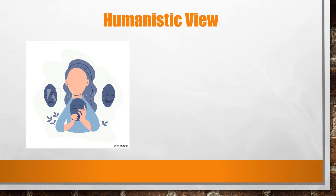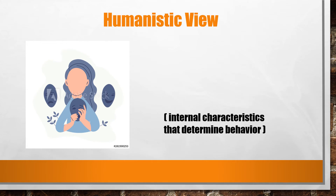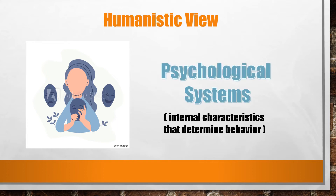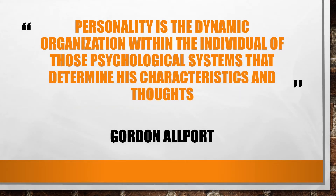According to Allport, even the behaviour which seems to be controlled by external forces is actually controlled by internal forces. The primary focus of Allport was on the traits and other internal characteristics that determine the behaviour of a person. He refers to these internal factors as psychological systems. Personality is the dynamic organisation within the individual of those psychological systems that determine his characteristics and thoughts.